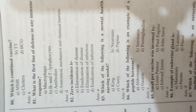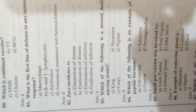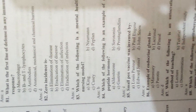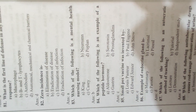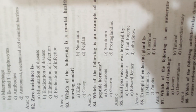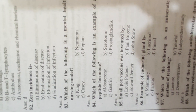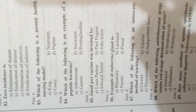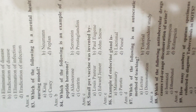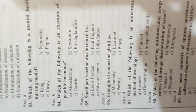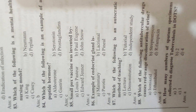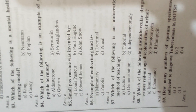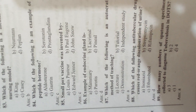Question 83: Which of the following is a mental health nursing model? Answer B, Neumann. Question 84: Which of the following is an example of a peptide hormone? Answer C, gastrin. Question 85: Smallpox vaccine was invented by Answer C, Edward Jenner. Question 86: Example of endocrine gland is Answer D, pineal gland.